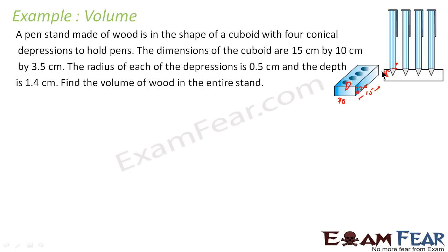You have to find the volume of the wood in the entire stand. What you do is first find the volume of the cuboid and then subtract the volume of the four conical depressions. The volume of the wood will be: take the volume of the whole cuboid and from this subtract the volume of the depressions.